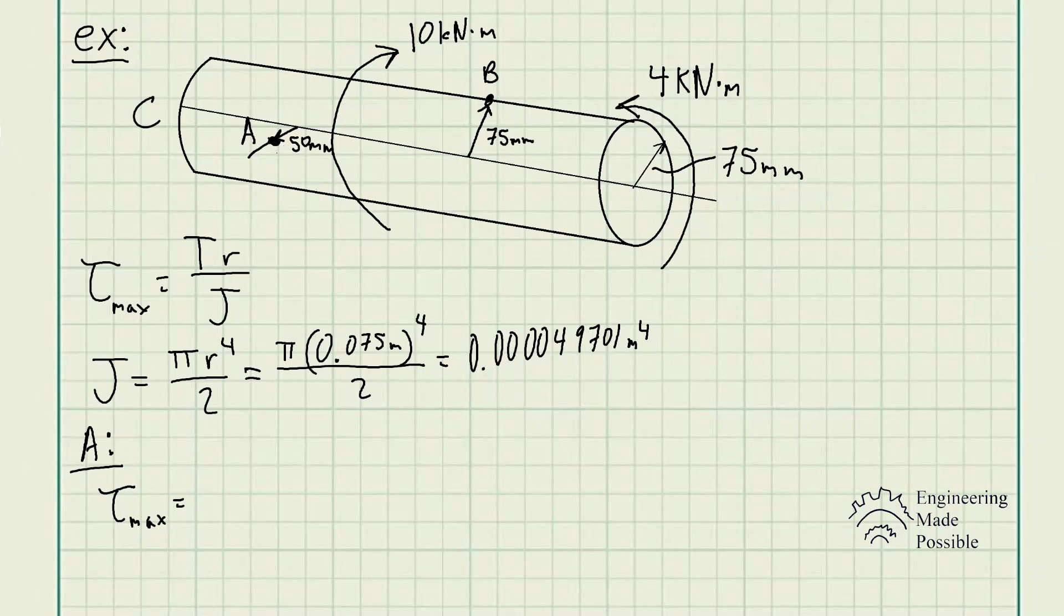Now, what torque would point A be experiencing? Well, let's just imagine first going one by one. If you have 10 kilonewtons meter torque applied here, then that's going to rotate this portion of the shaft in that direction.